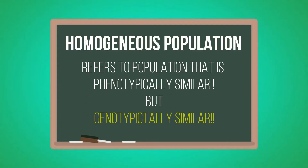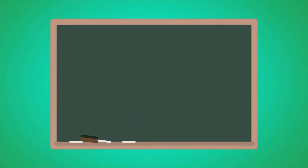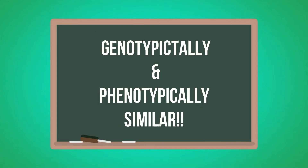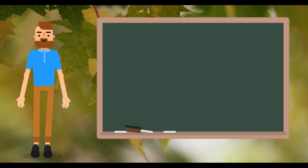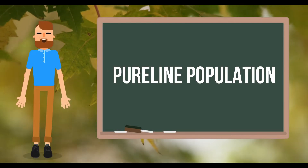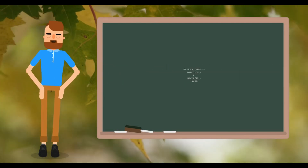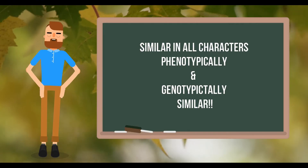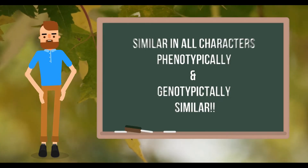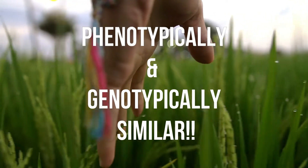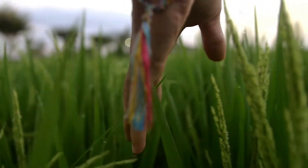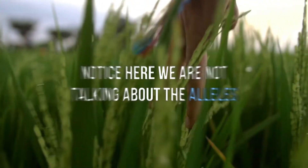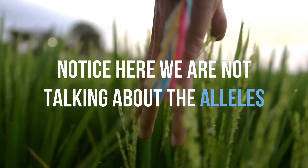A homogeneous plant population is one in which all the individuals in the population are both genetically as well as phenotypically similar. An example is the pure line population, where all individuals are similar in all characters — both phenotypically and genetically similar. Notice here we are not talking about the alleles of a gene.